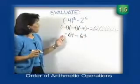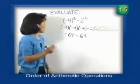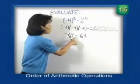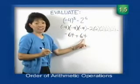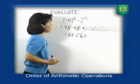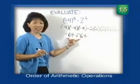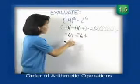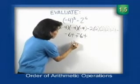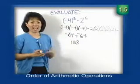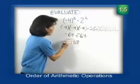So we have negative 64 minus 64. Remember, we change the subtraction sign to addition and change the sign of the number being subtracted to the opposite sign. Then add as usual. The signs are the same, so we add the numbers and take their sign: 64 plus 64 is 128. Since both are negative, that gives us a negative sum: negative 128.